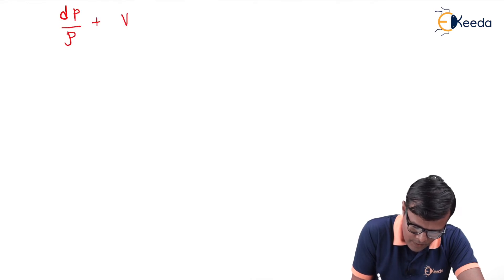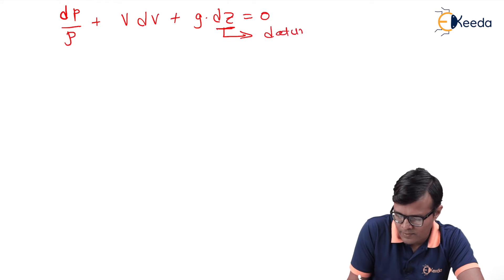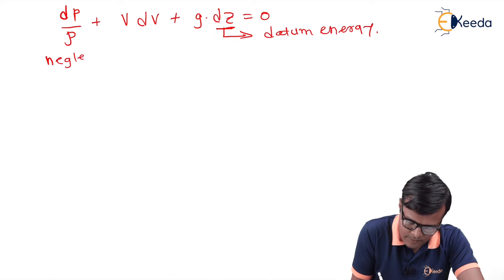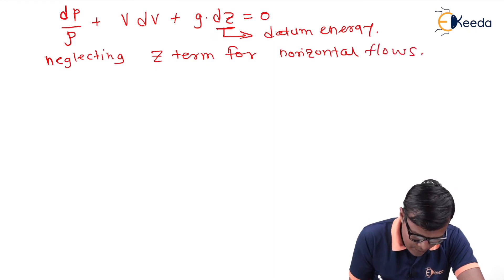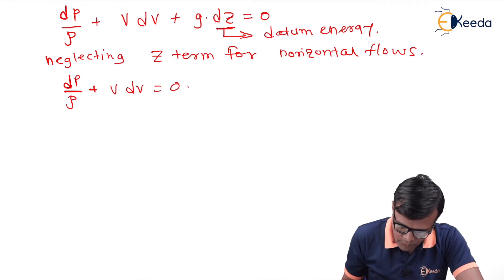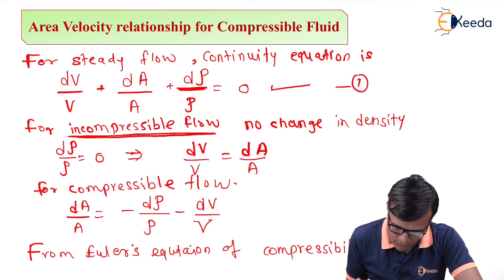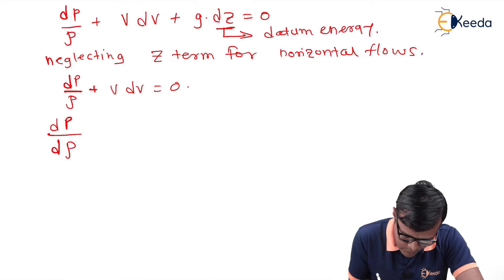From Euler's equation: dp/ρ + V·dV + g·dz = 0. The g·dz term is the datum energy term. Neglecting it for horizontal flows, we get dp/ρ + V·dV = 0. We can rewrite dp/ρ as (dp/dρ)·(dρ/ρ), which is a rearrangement to introduce the density ratio.